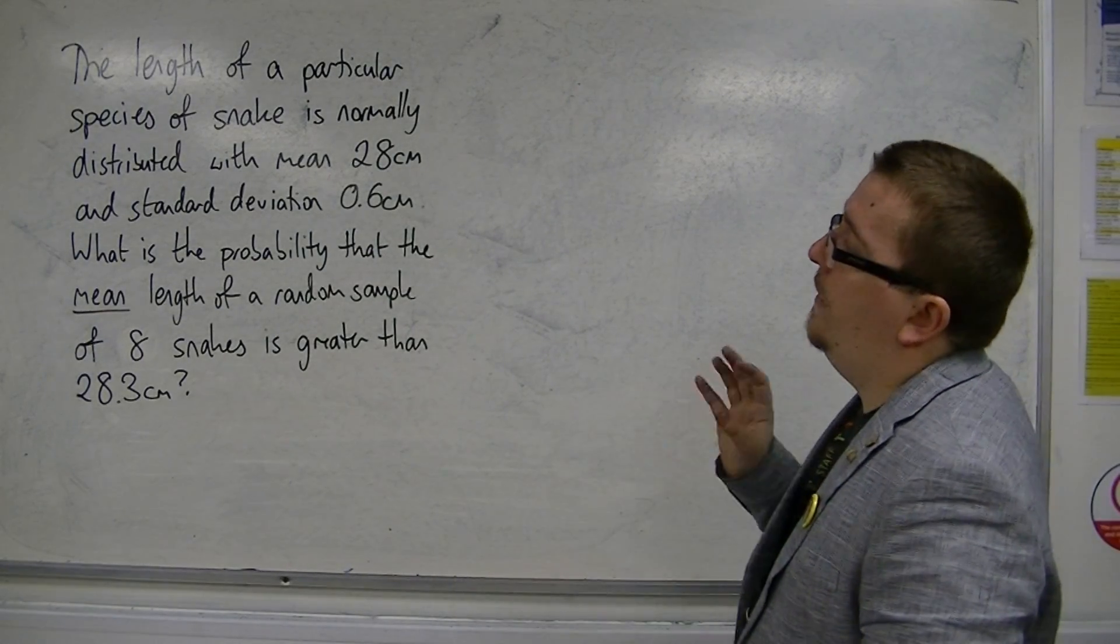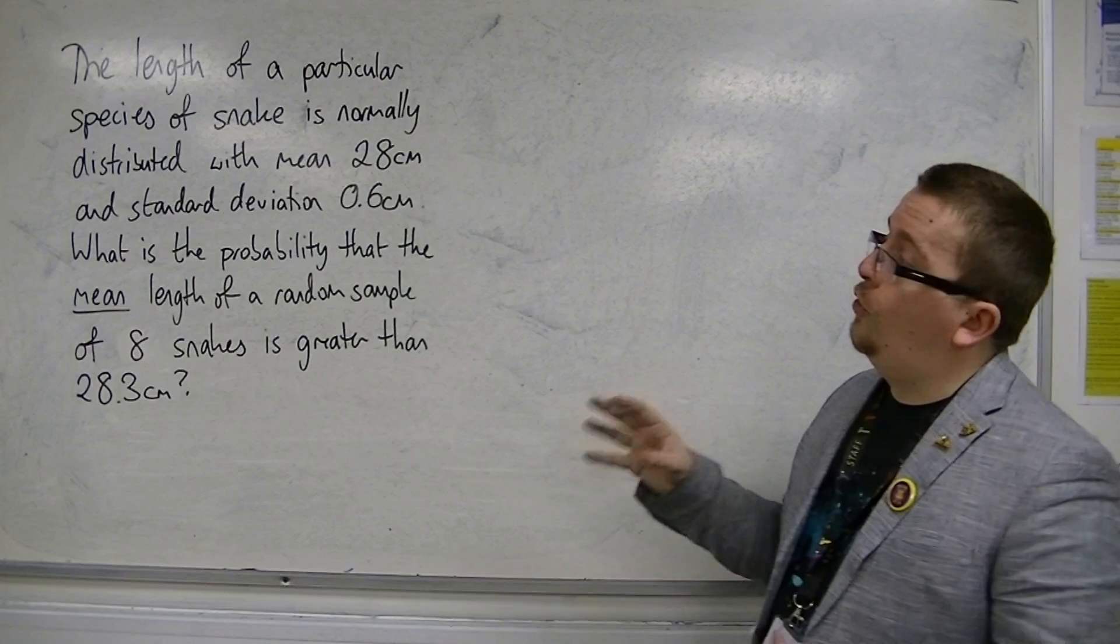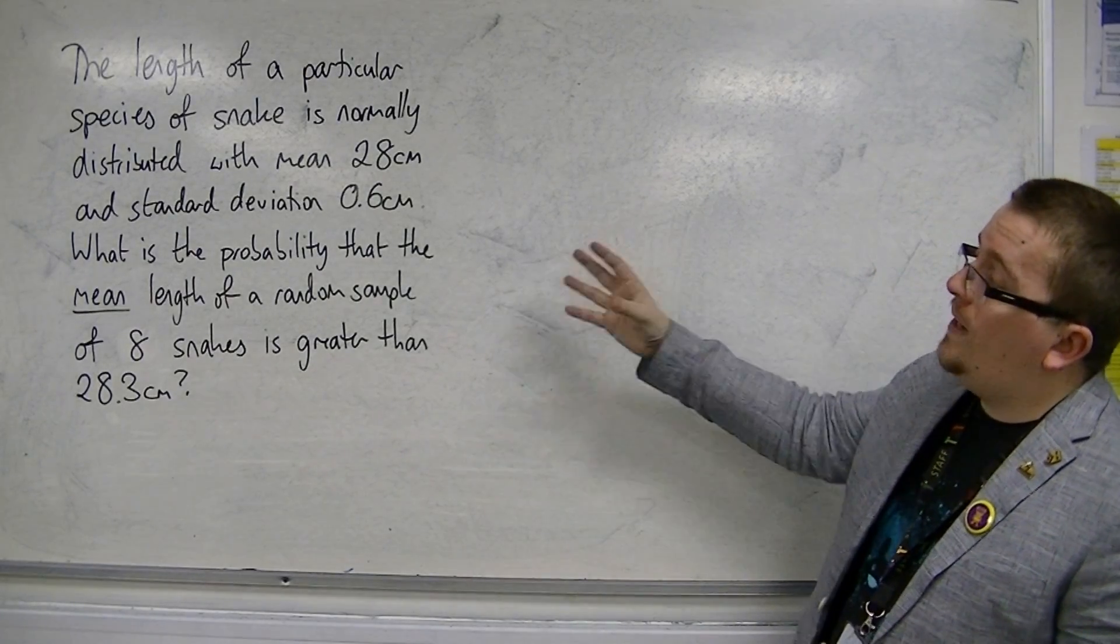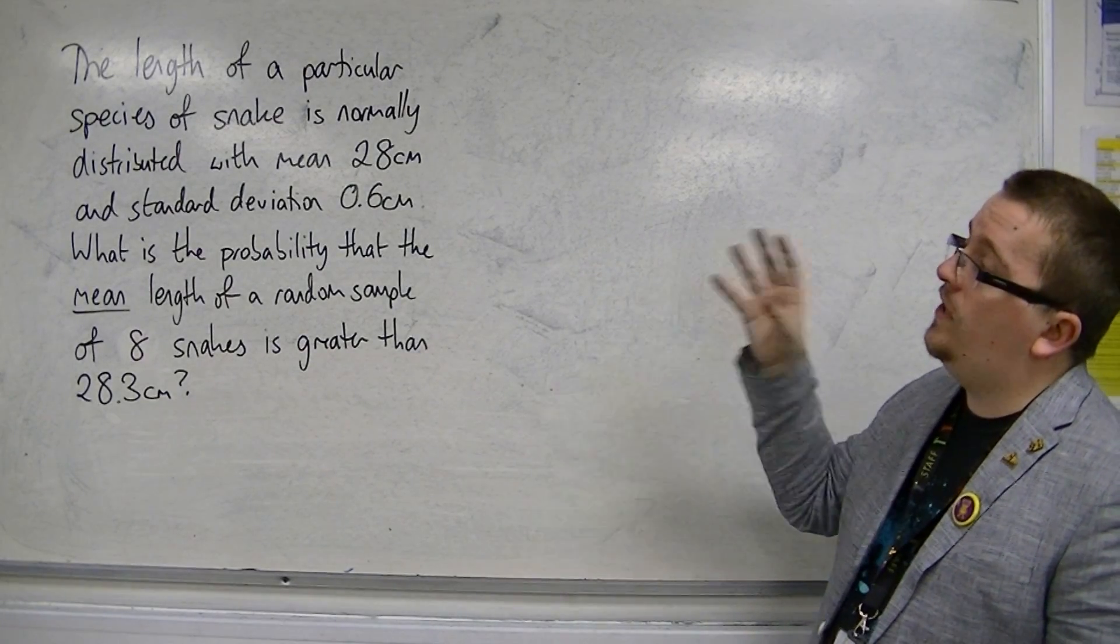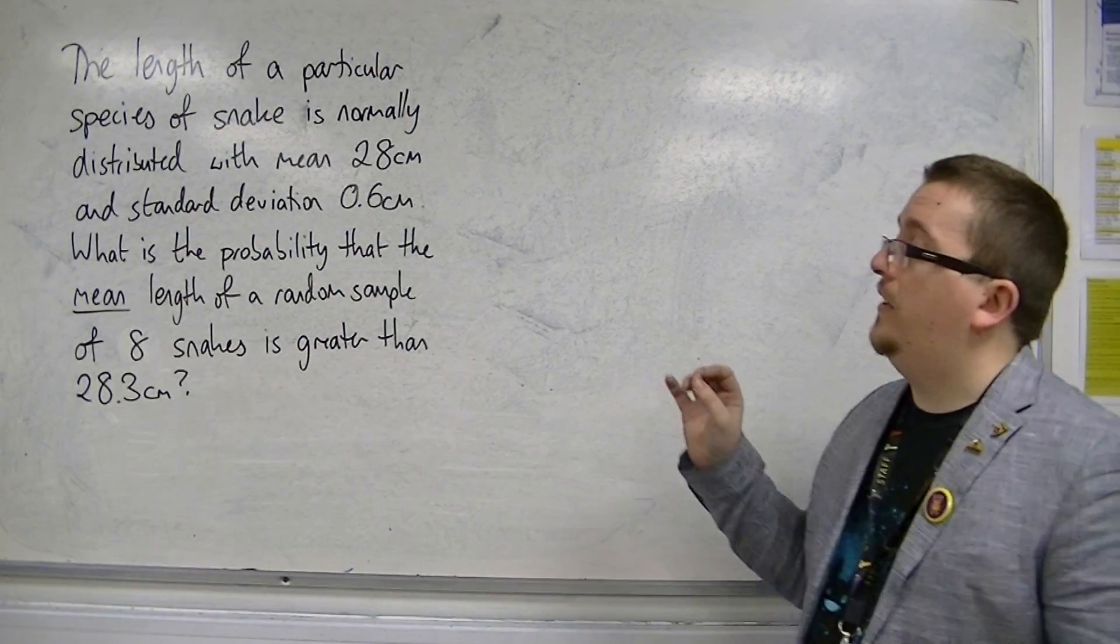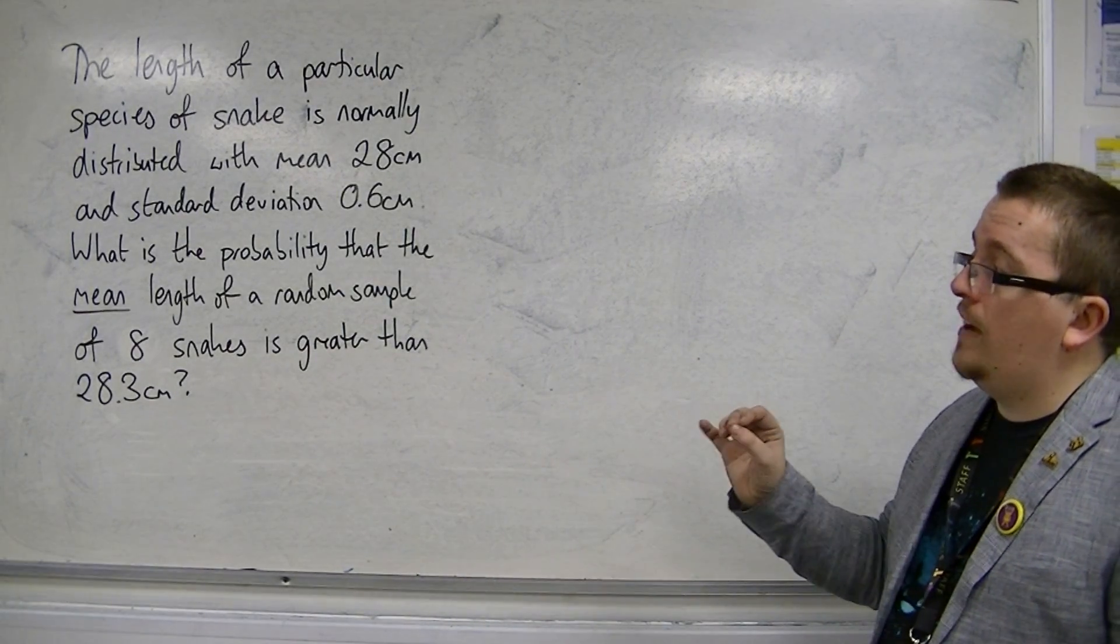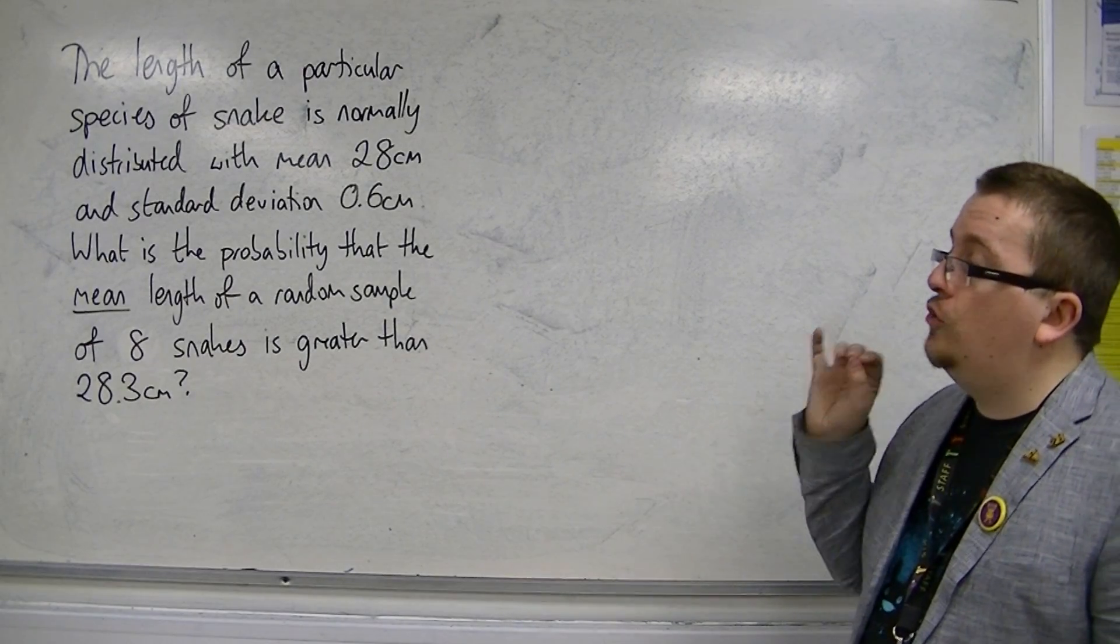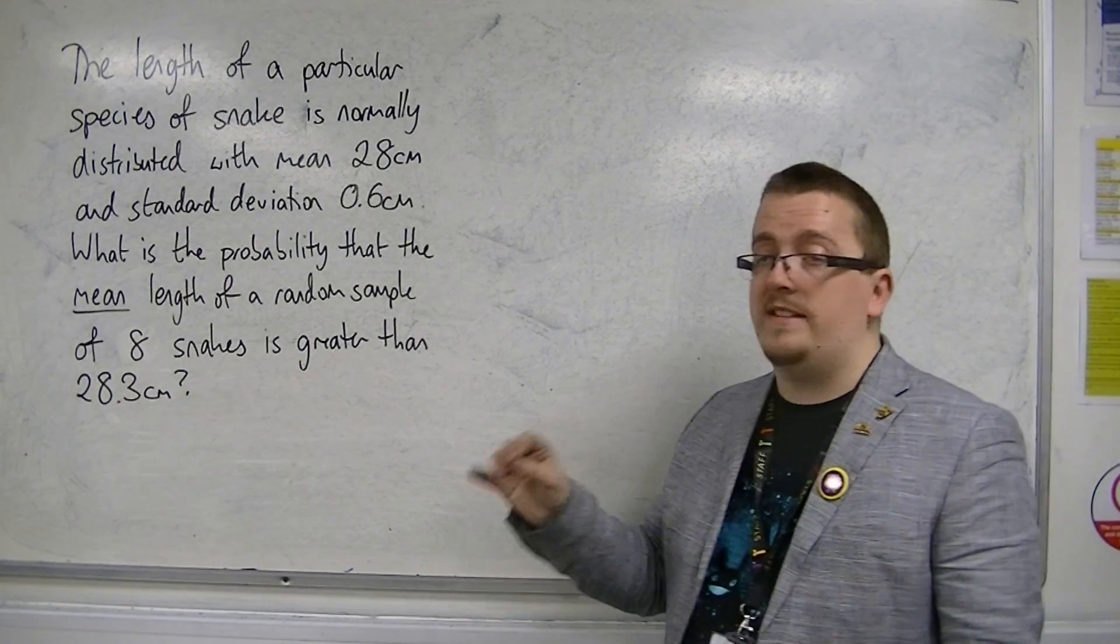The length of a particular species of snake is normally distributed with mean 28 centimeters and standard deviation 0.6 centimeters. What is the probability that the mean length of a random sample of 8 snakes is greater than 28.3 centimeters?